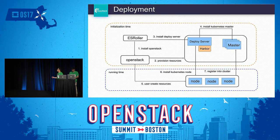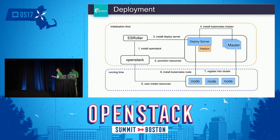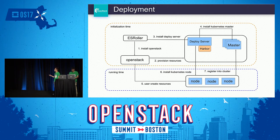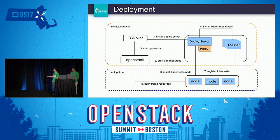This is the deployment process for the combination of OpenStack and Kubernetes. Our deployment tool is named ESRoller. As a numbered sequence: first it installs OpenStack, then provisions resources like VMs and networks. Next, the roller installs a deploy server, which installs Kubernetes masters. All four steps happen at initialization time, after which ESRoller is destroyed. During runtime, users can update the Kubernetes cluster, create new resources, and call the deploy server to install new nodes, which then register into the cluster.